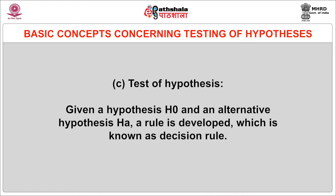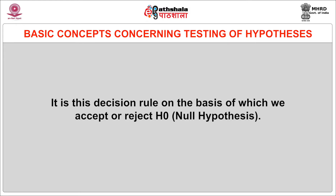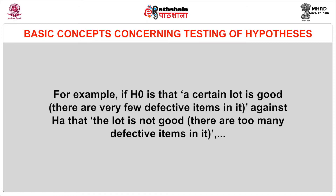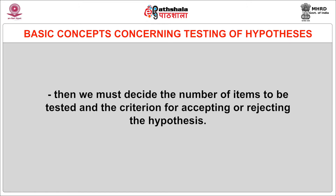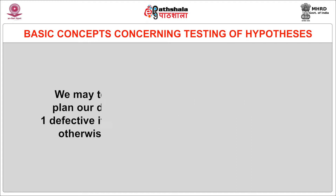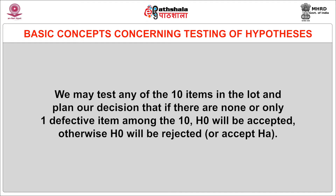The third concept is the test of hypothesis. Given a null hypothesis and an alternate hypothesis, a rule is developed which is known as a decision rule. It is this decision rule on the basis of which we accept or reject the null hypothesis. For example, if the null hypothesis is that a certain lot is good with very few defective items, against the alternate hypothesis that the lot has too many defective items, then we must decide the number of items to be tested and the criterion for accepting or rejecting the hypothesis. We may test any 10 items in the lot and plan a decision that if there are none or only one defective item among the 10, the null hypothesis will be accepted; otherwise, null hypothesis will be rejected.